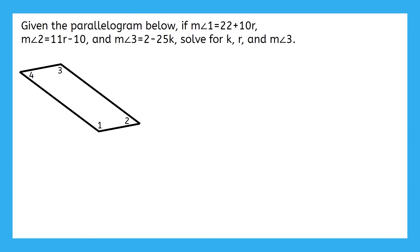We have one problem left to do, and this one is focused on angle measurements instead of side measurements. Given the parallelogram below, if the measure of angle 1 is 22 plus 10R, the measure of angle 2 is 11R minus 10, and the measure of angle 3 is 2 minus 25K, solve for K, R, and the measure of angle 3. So what relationships exist between these three angles in our parallelogram? Are there any pairs that are supplementary or congruent? Pause the video and see what you can come up with.